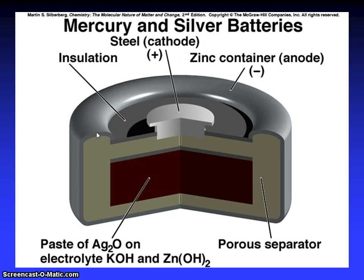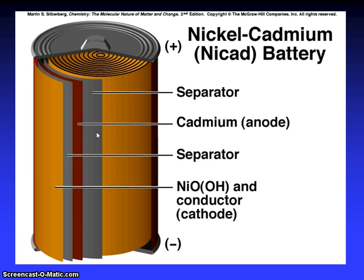Mercury and silver battery. Steel cathode, zinc container anode, insulator, paste of silver oxide on electrolyte KOH and zinc hydroxide, porous separator. Nickel cadmium nicad battery: separator, cadmium anode, separator, nickel oxide or hydroxide, and conductor cathodes.